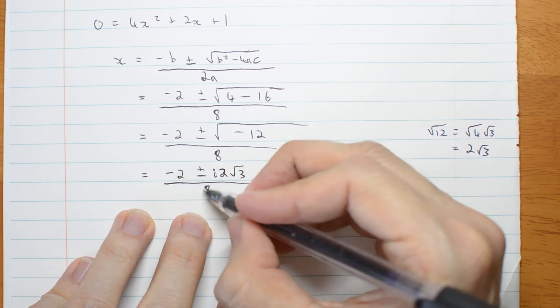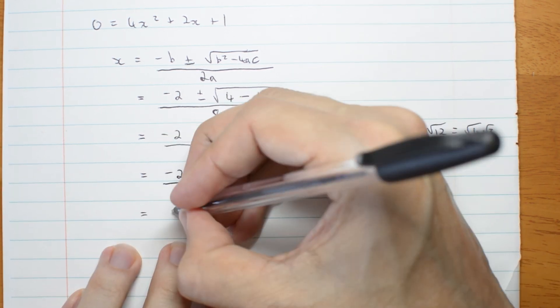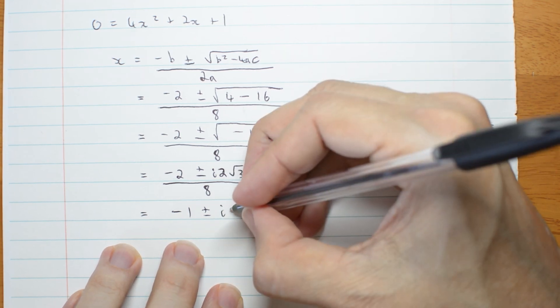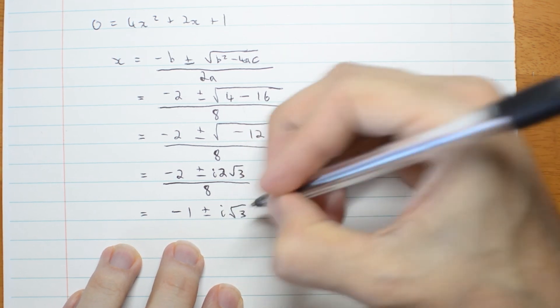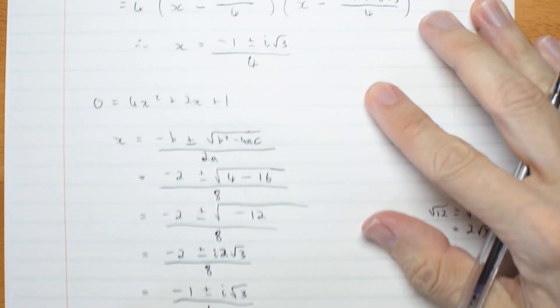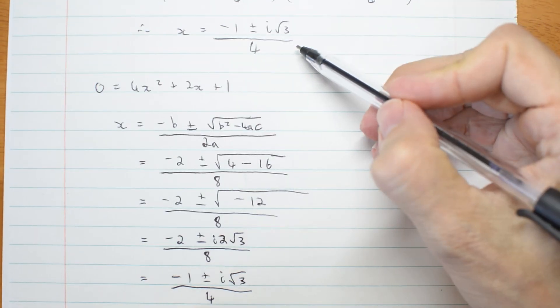Well, I've got a common factor of 2 everywhere. So I can write that as negative 1 plus or minus i times root 3 all over 4. And look, it's the same solution.